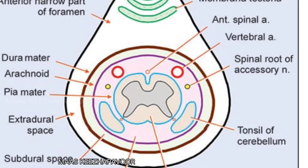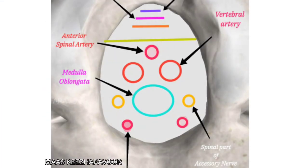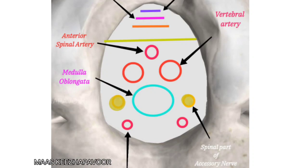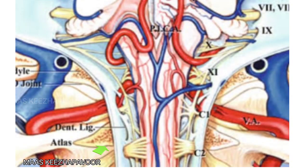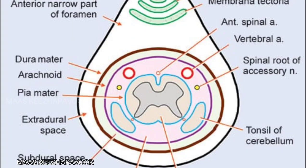The larger posterior compartment transmits the lower end of medulla oblongata with its meninges. The anterior and posterior spinal arteries descend, the right and left vertebral arteries and spinal root of accessory nerve ascend, along with the sympathetic plexus along the vertebral arteries and veins joining the venous plexus of medulla oblongata with the vertebral plexus of veins. The lower part of the tonsil of the cerebellum may project on each side of the medulla oblongata.